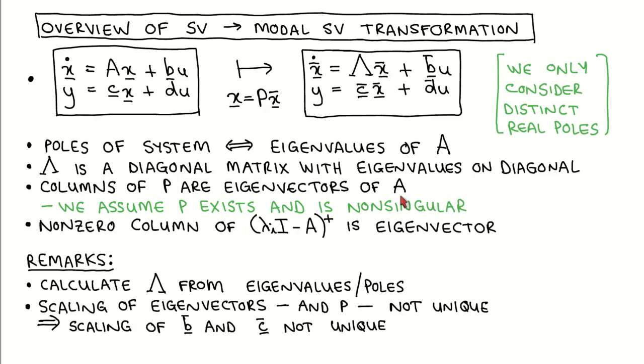Note that we assume that the matrix P exists and that it is non-singular, which is necessary for the transformation to exist. It is possible to prove this, but we will not do this. Refer to the textbook for details. We have also seen that a nice way of calculating the eigenvectors of A is to construct the adjoint of matrix lambda I times I minus A, and any non-zero column of this matrix is then an eigenvector corresponding to this eigenvalue. We have not proved this result yet. We will do this on the next page.